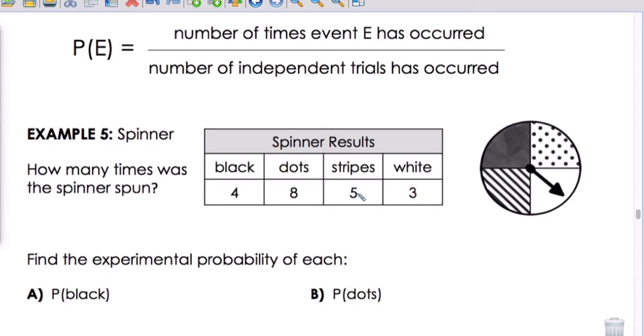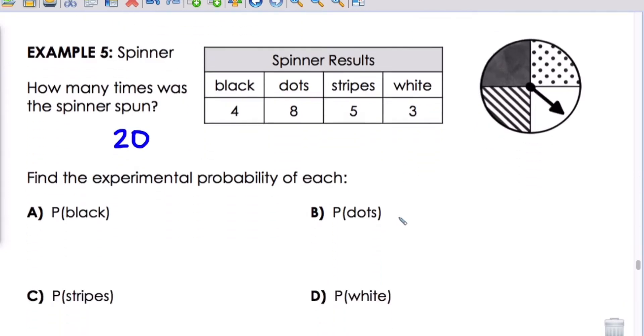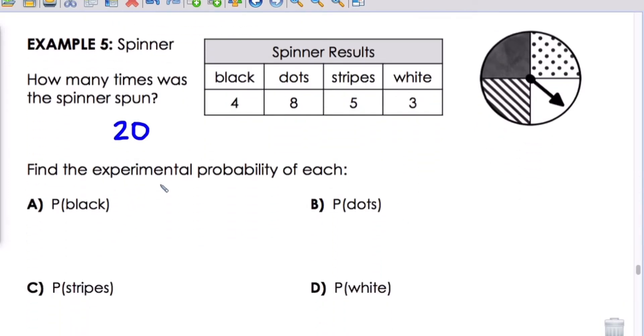Example five. We have a spinner. How many times was the spinner spun? We can see that it was spun 20 times if we add all of these together. So using that, we can find the experimental probability of each. We want to know P of black. Well, black is four, so we would say it's four out of the 20 times we spun. So that gives us one-fifth which is 20%.